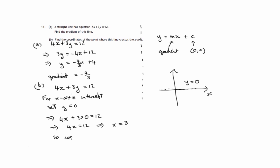So coordinates, required coordinates, are 3 and of course y is 0. 3, 0. So this line crosses the x-axis at the point 3, 0.